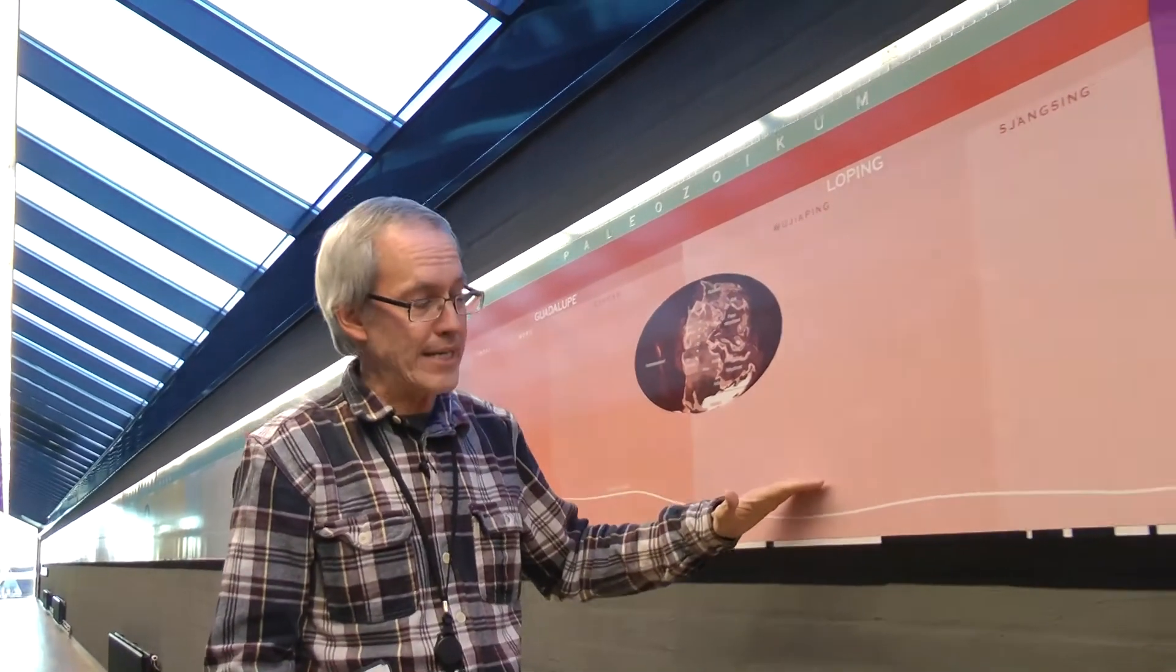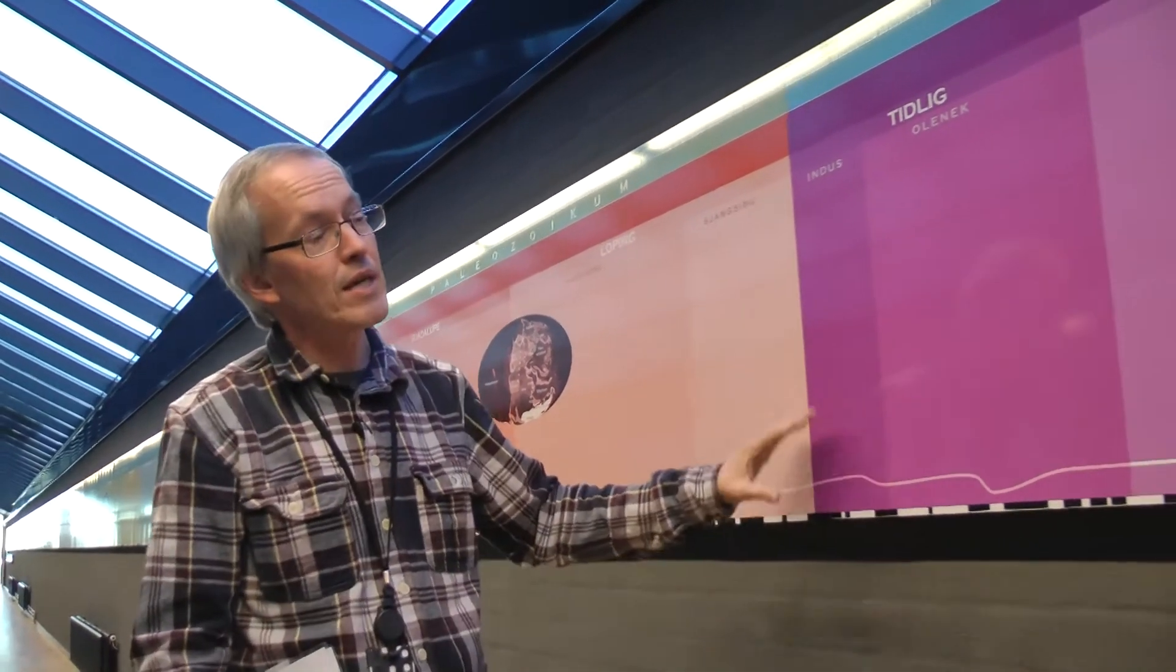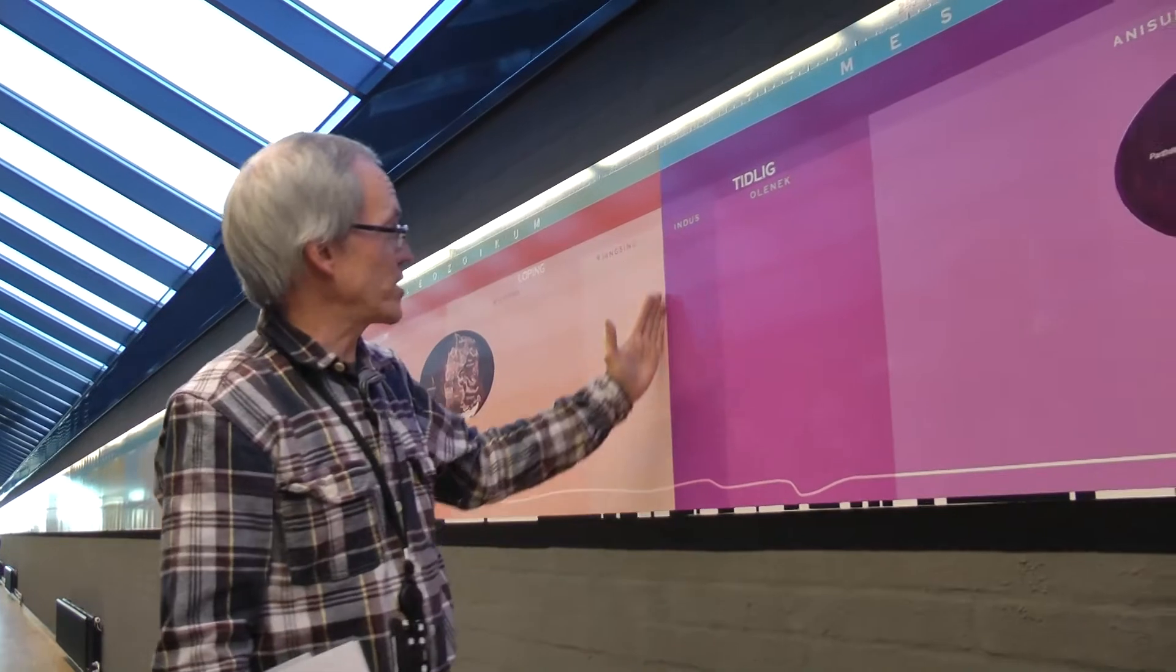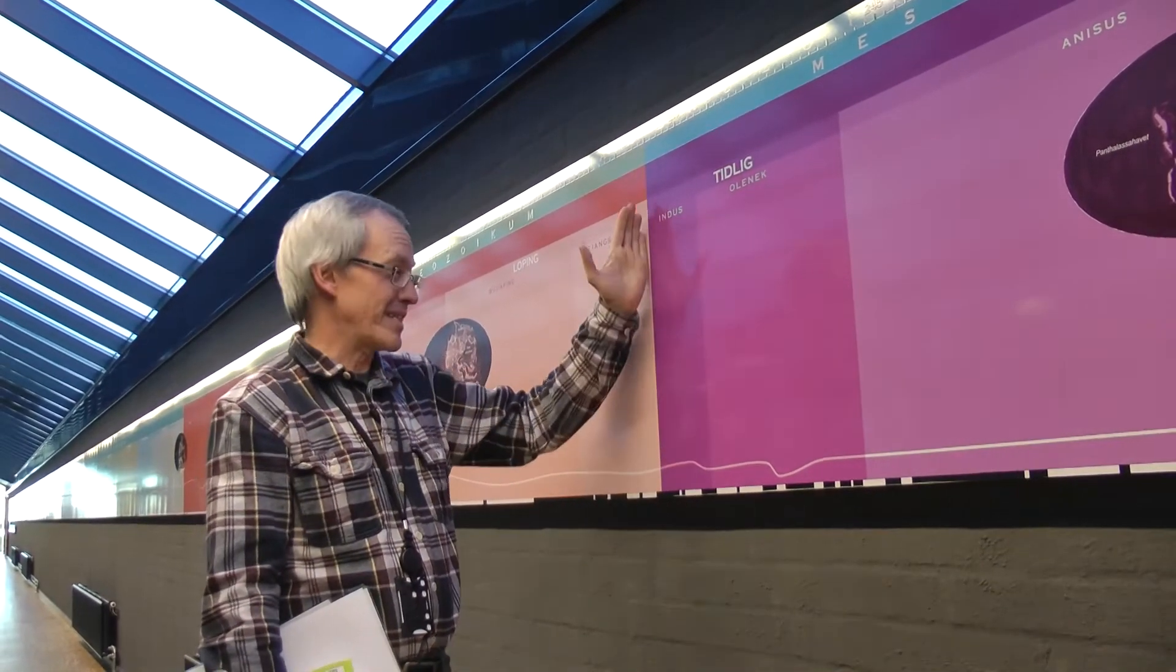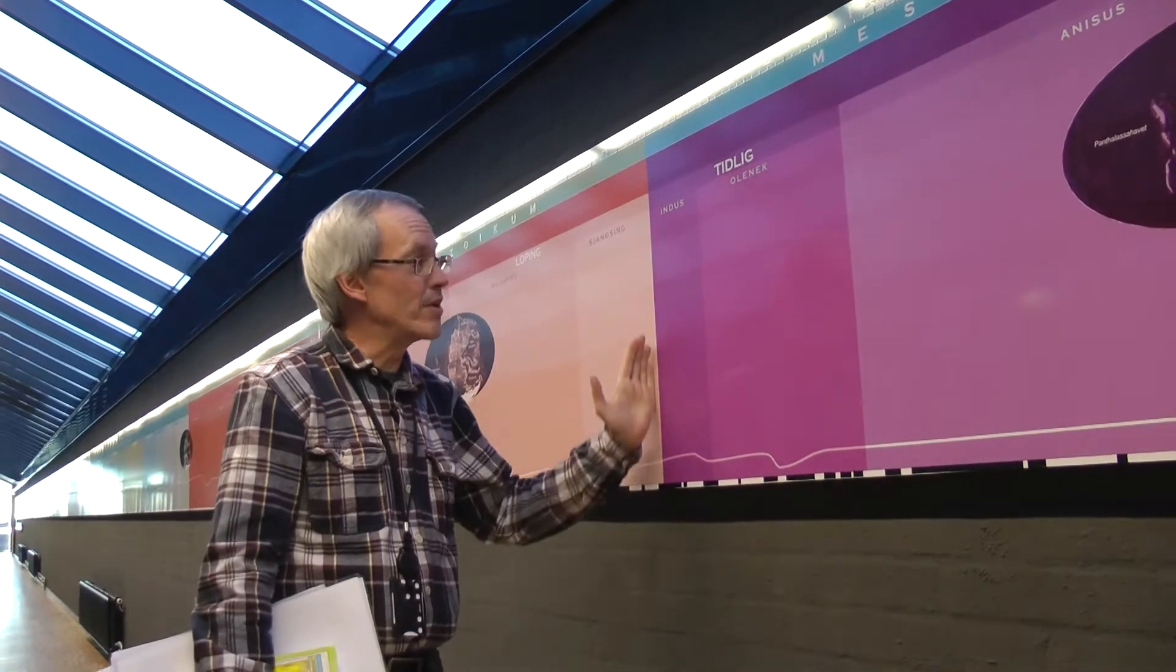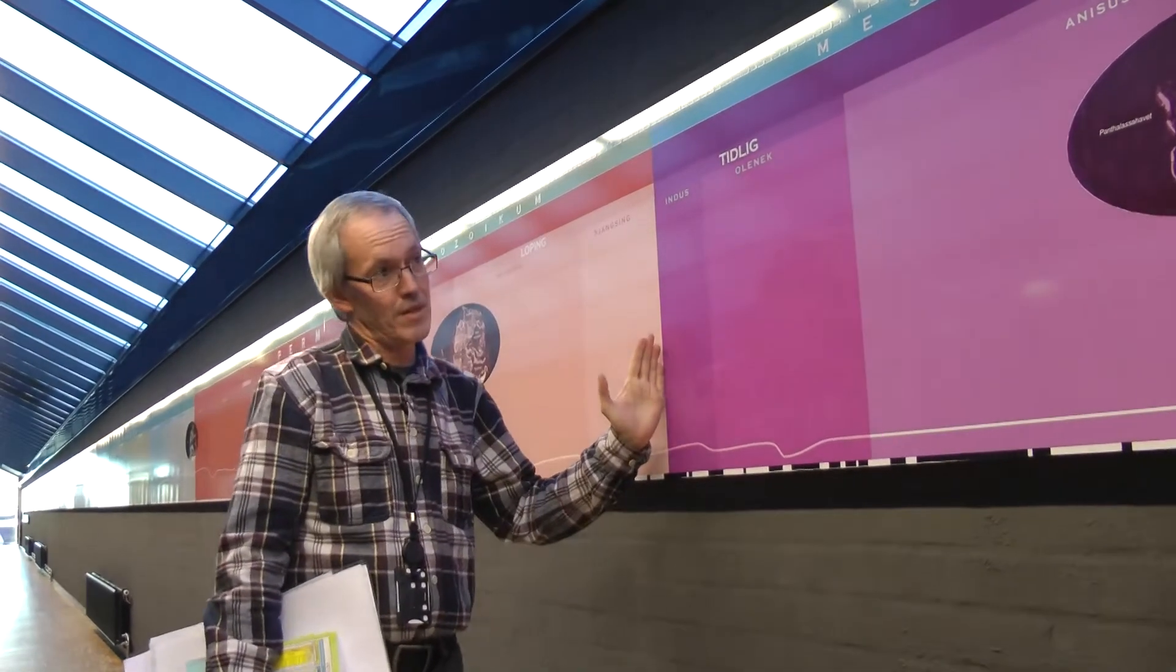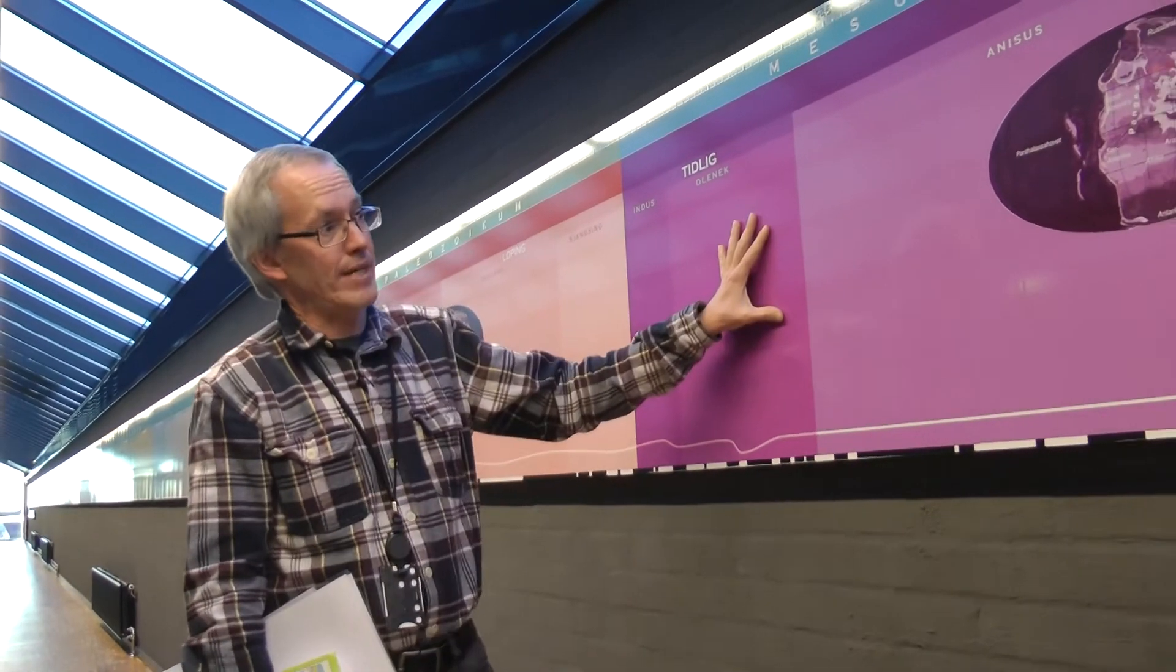So we have very low sea level. There's no seafloor spreading to speak of, so the ocean basins expand and sink, and so we have extremely low sea level. We have an enormous extinction of life at this boundary between the Permian and the Triassic. About 95% of the number of species disappear.